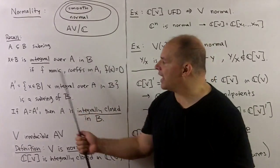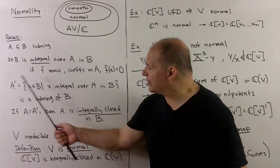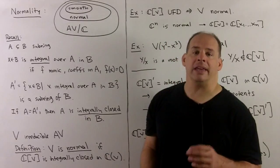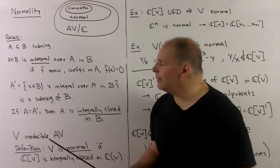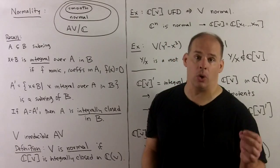If we collect all these elements, I'll denote that by A'. That'll be a subring of B. We call that the integral closure of A in B. And if A equals A', then we say that A is integrally closed in B.